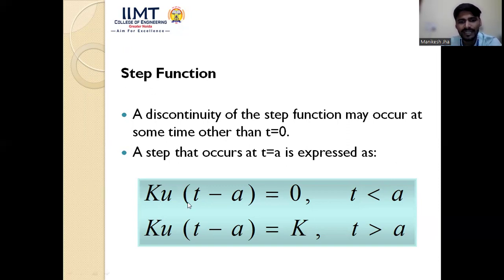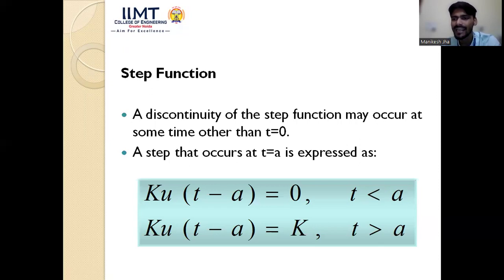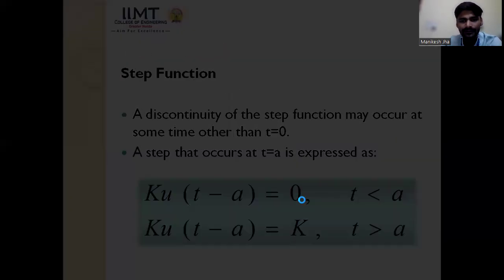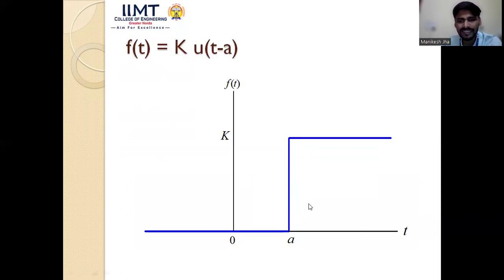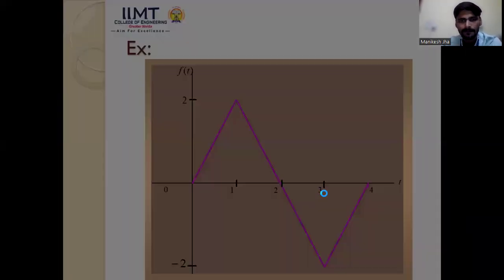For k·u(t−a), the signal k·u(t) is shifted by a units to the right (delayed). It is defined as: k when t ≥ a, and 0 when t < a. Graphically, before time a the value is 0, and from a to infinity the value is k. The jump discontinuity now occurs at t = a.